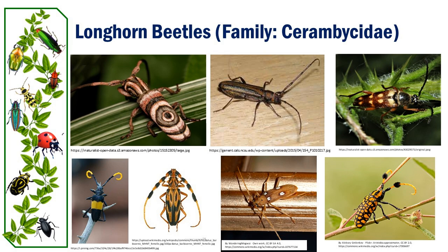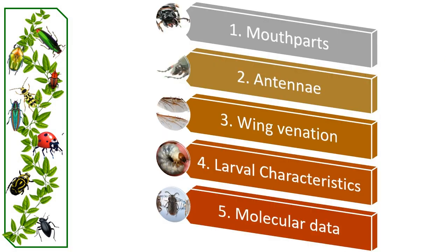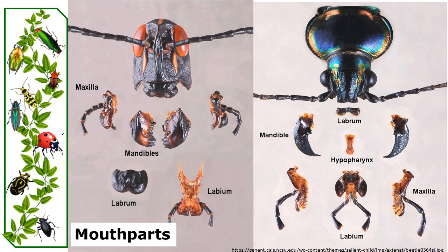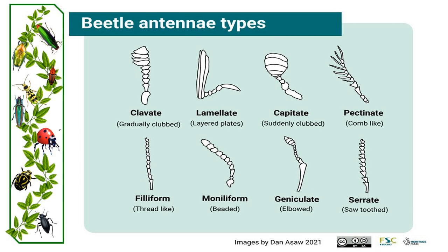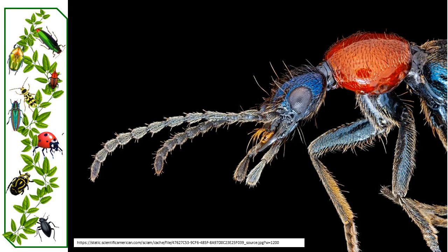The classification and taxonomy of beetles is based on a combination of morphological characters, molecular data and evolutionary relationships. Some of the key features used in beetle taxonomy include mouthpart structure — the shape and structure of mouthparts such as the mandibles and maxillae can provide valuable insights into the beetle's feeding habits and evolutionary relationships. The second is the morphology of the antenna; its shape, length and segmentation can vary greatly among beetle groups and are used for identification and classification purposes.